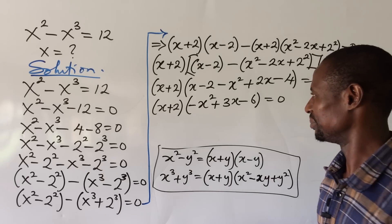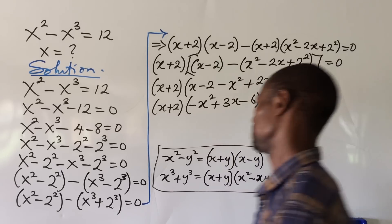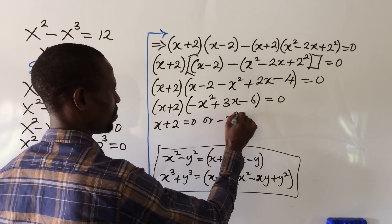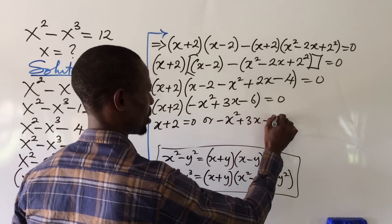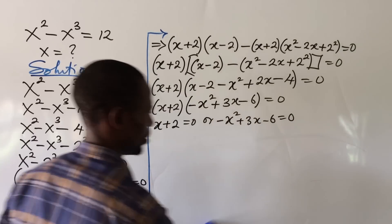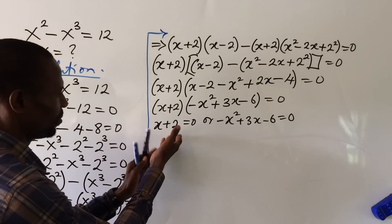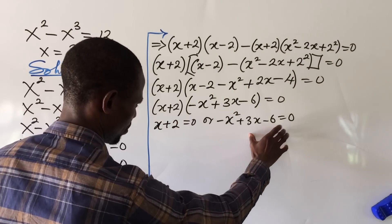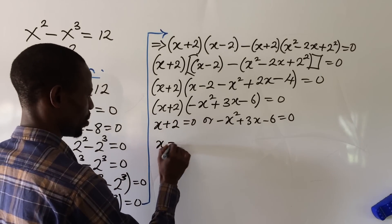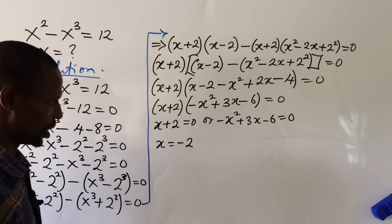At this point we apply the zero product rule, equating each factor to zero. So we have: x plus 2 equal to zero, or minus x squared plus 3x minus 6 equal to zero. From the first equation, x equals minus 2. That's our first root, x₁ equals minus 2.